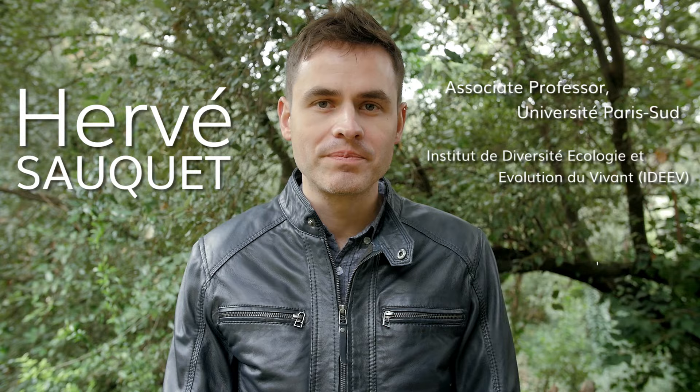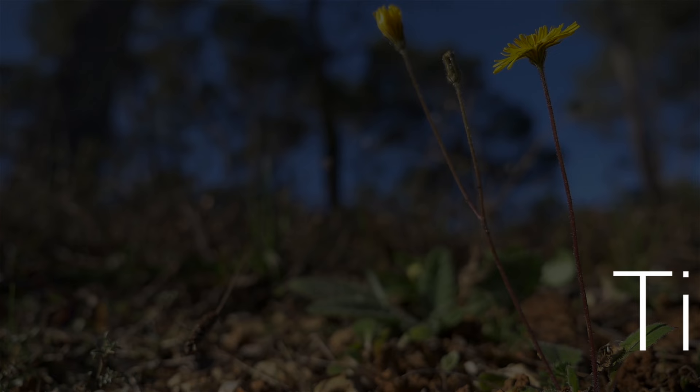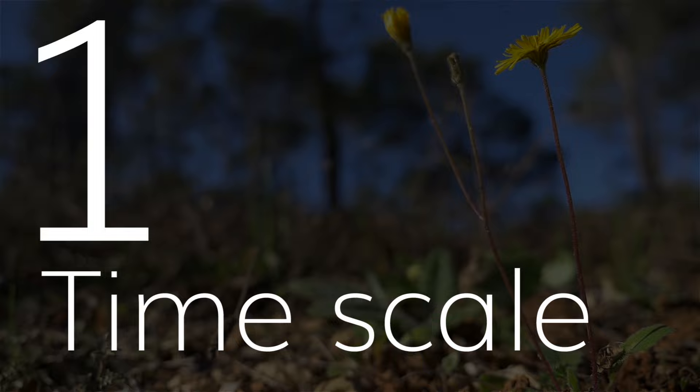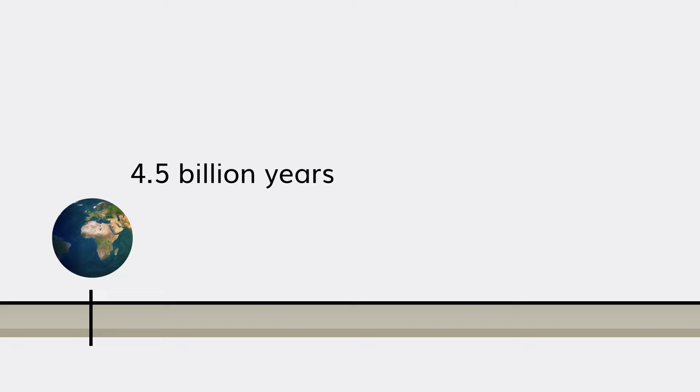Plants have not always existed. As for all other forms of life, there was a beginning. To give you an idea on the geological time scale: Earth is about 4.5 billion years old, and life itself dates back to about 3.5 billion years.